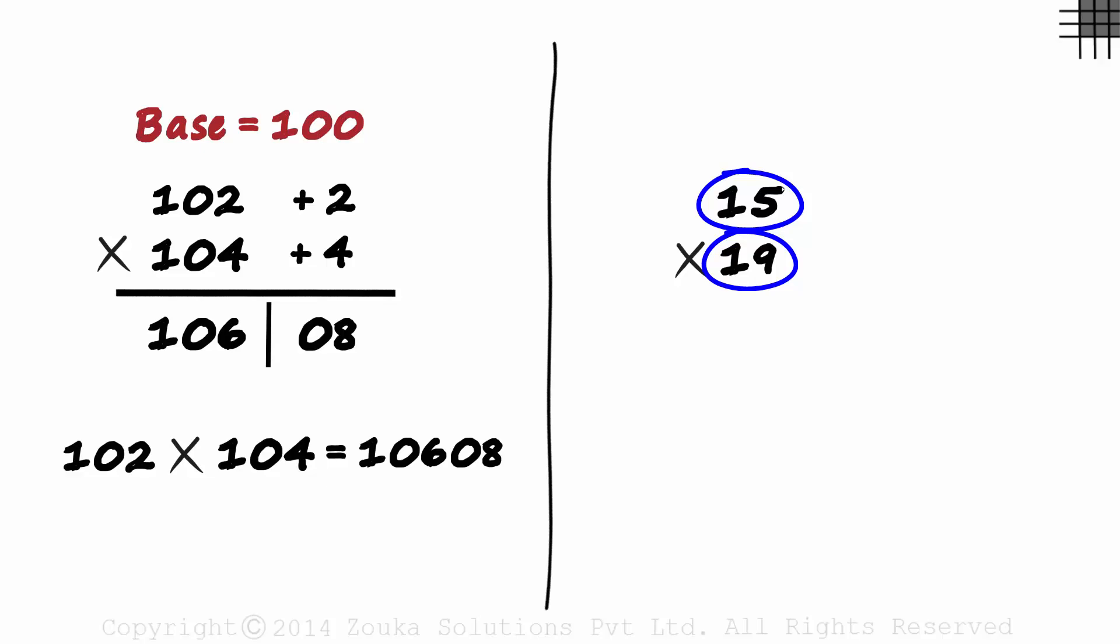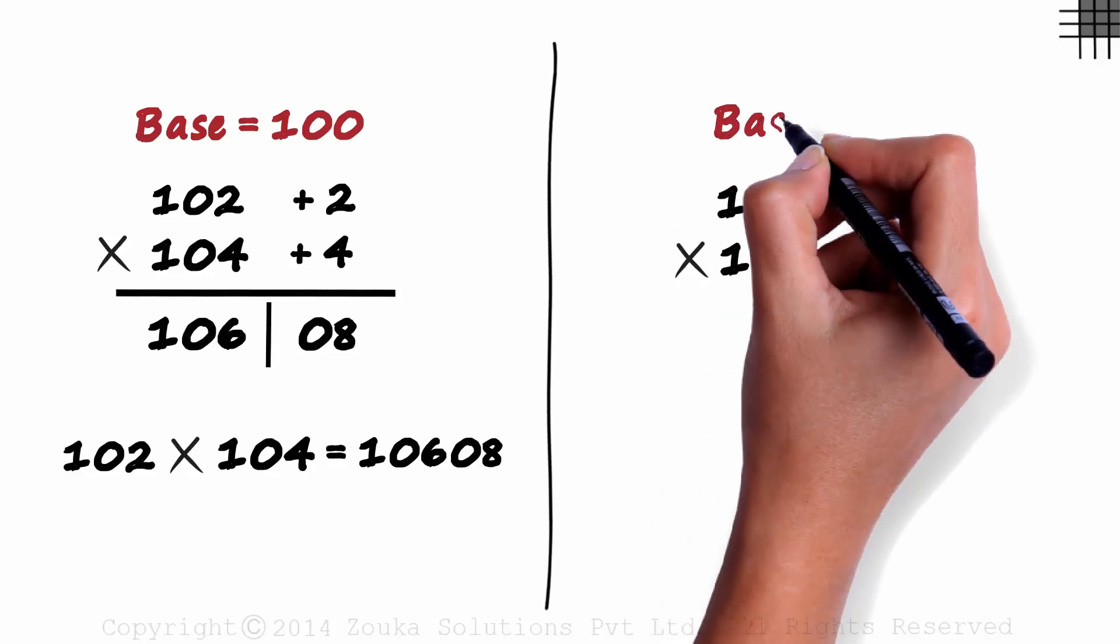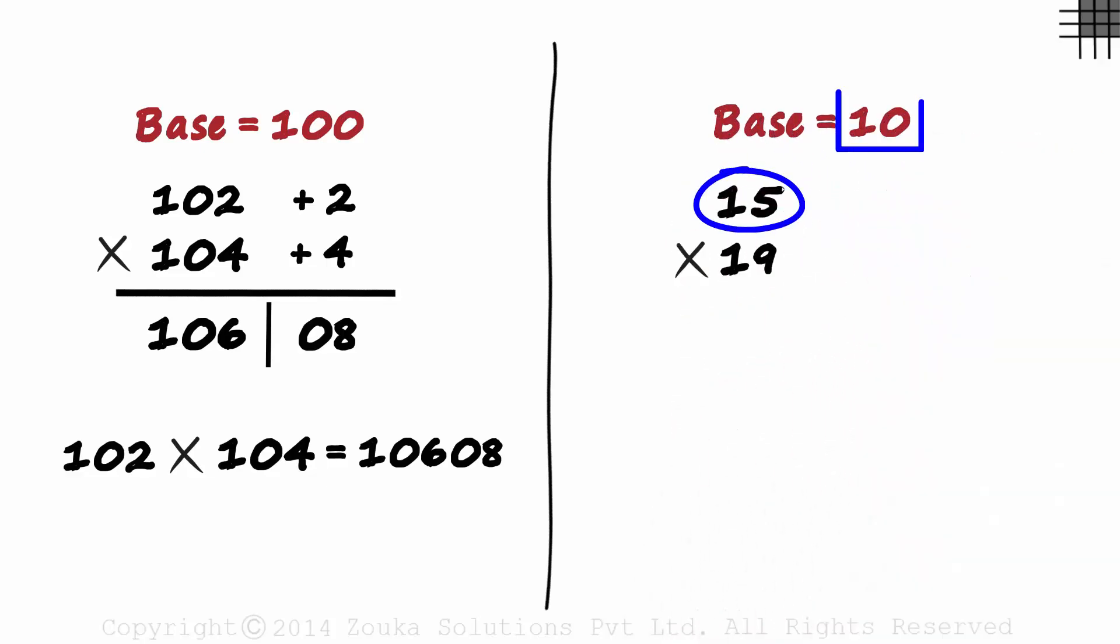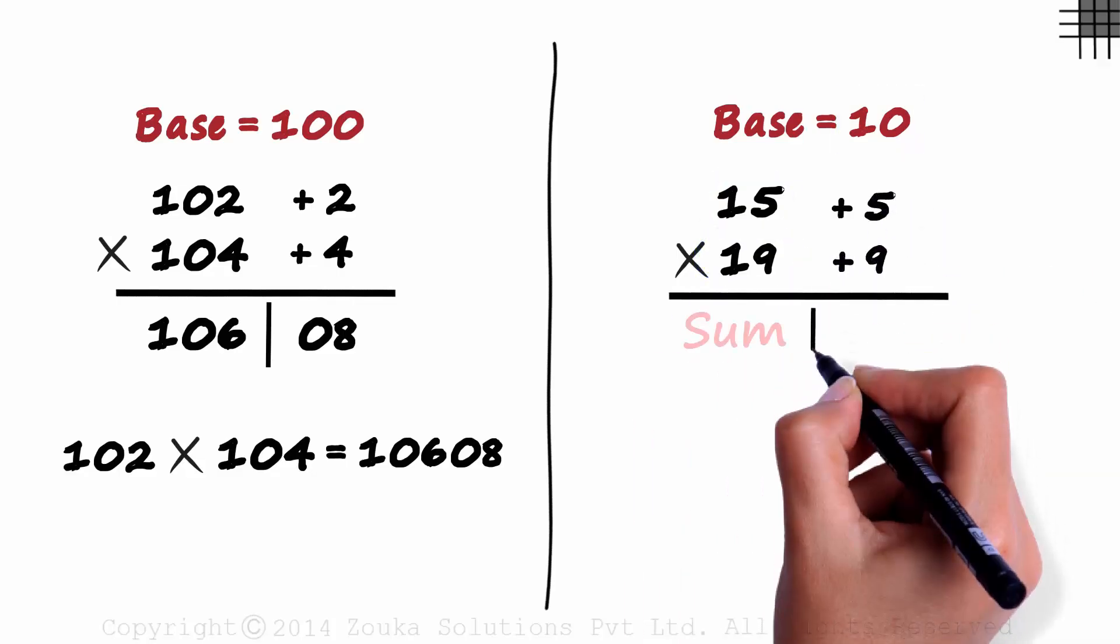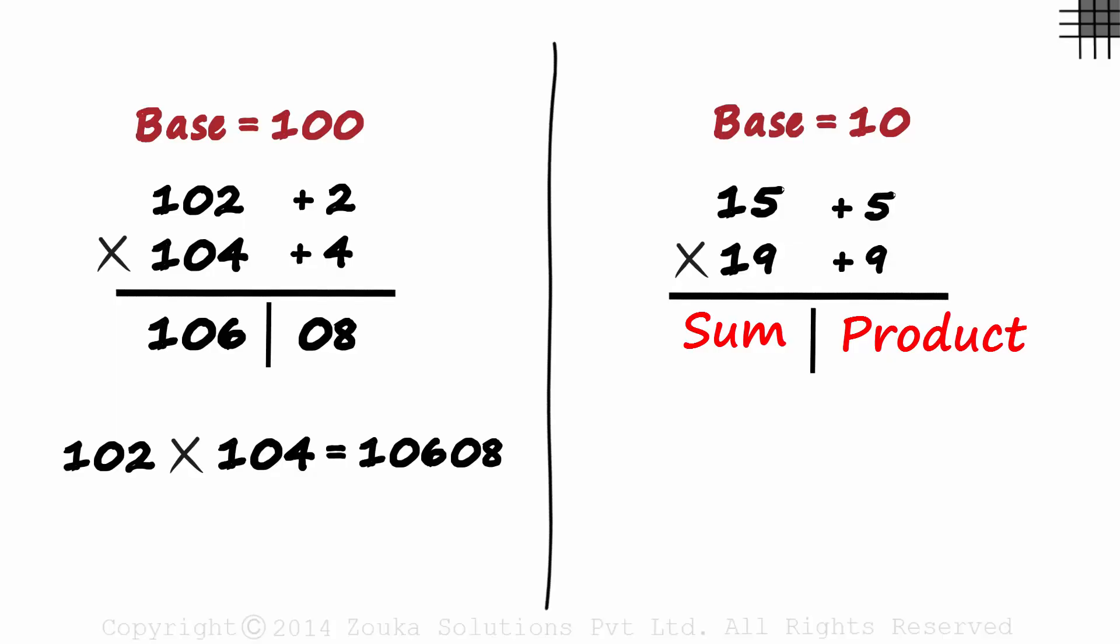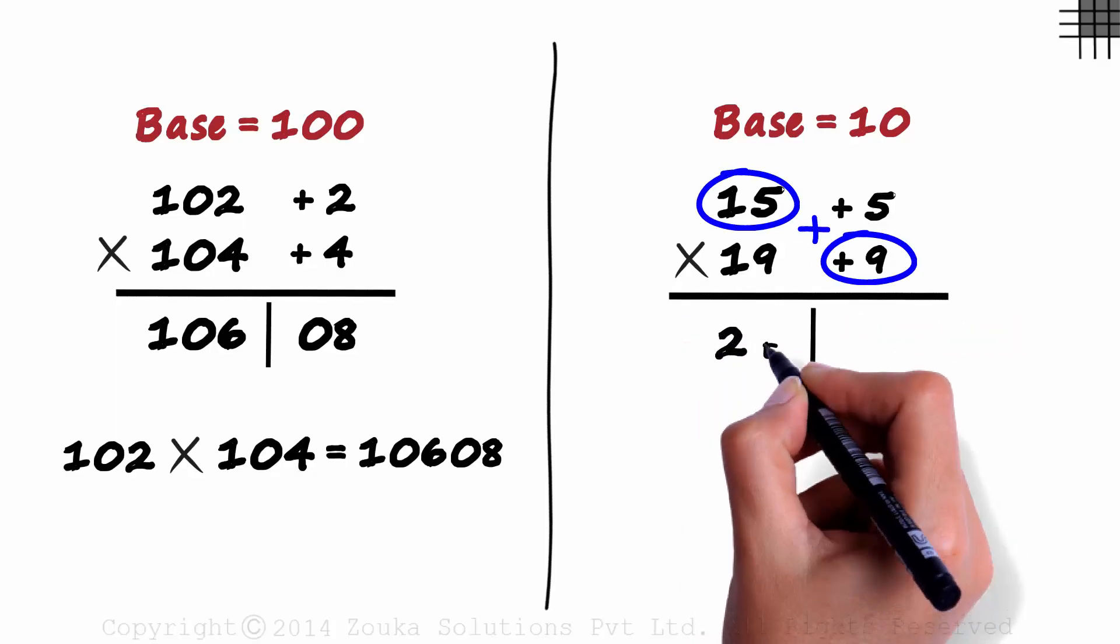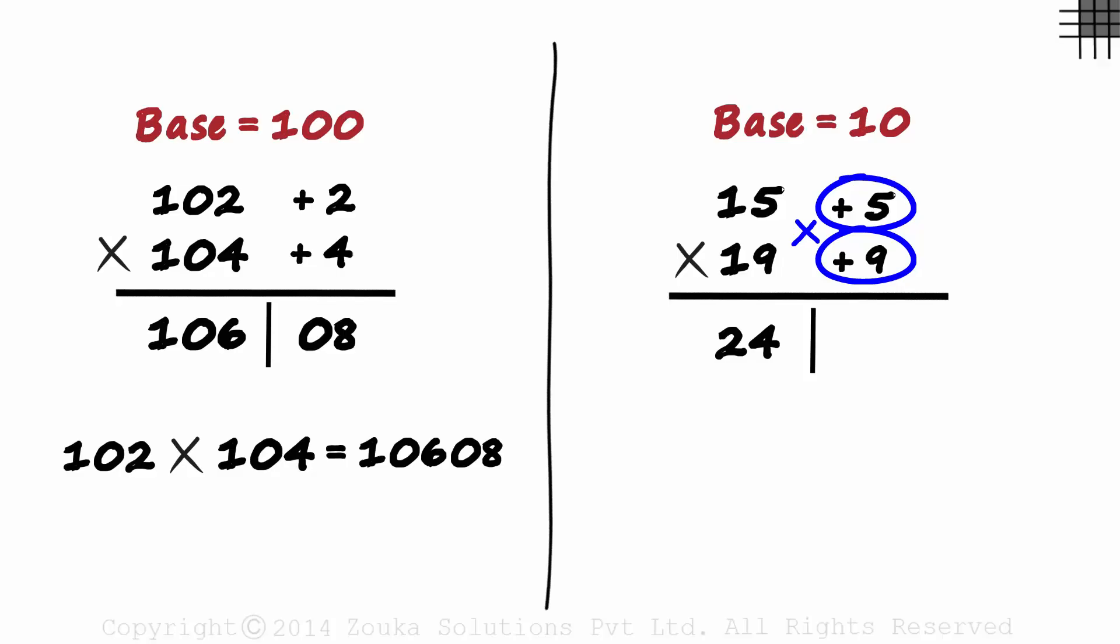As both the numbers are close to 10, let's make 10 as the base here. 15 minus 10 is 5 and 19 minus 10 is 9. Sum on the left and product on the right. 15 plus 9 is 24 and 9 times 5 is 45.